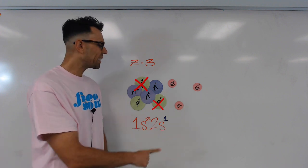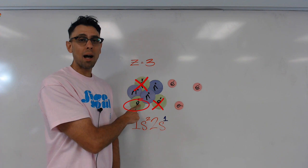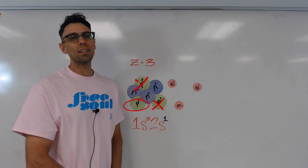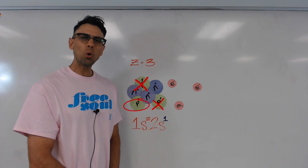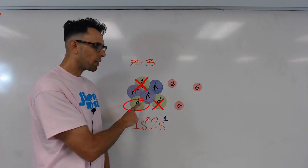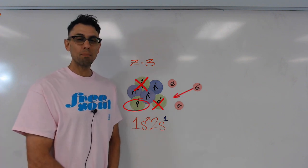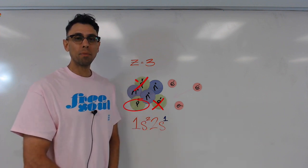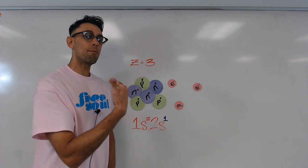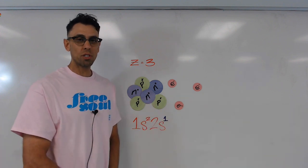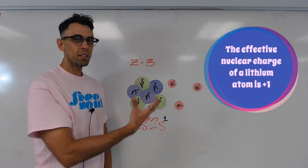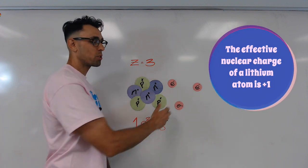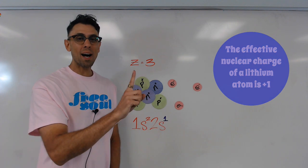And that only leaves one proton that isn't being blocked. So this electron, this outermost valence electron, actually only knows of one proton in the nucleus. It's only being pulled on by one proton. So we would say that the effective nuclear charge, the amount of the nuclear charge that's actually having an effect on an outermost electron, is positive one.